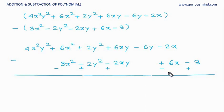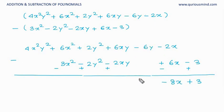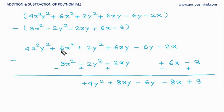So the signs change: the bottom row becomes plus, minus, plus, plus. Now we follow these new signs and add. The constant gives plus 3. Minus 2x plus the now-minus 6x gives minus 8x. Minus 6y stays as it is — nothing to add or subtract. Plus 6xy plus 2xy gives plus 8xy. Plus 2y square plus 2y square gives plus 4y square.